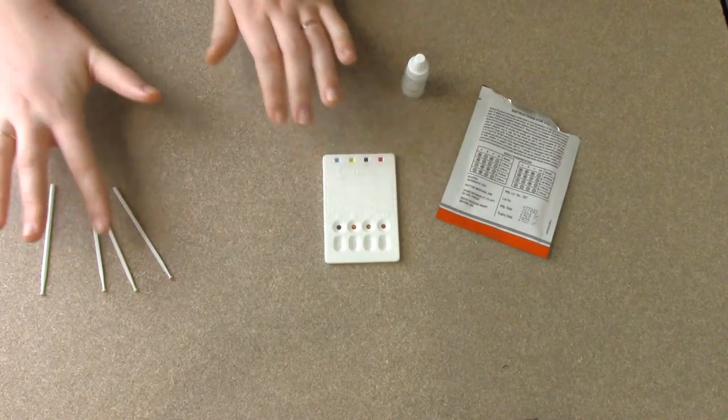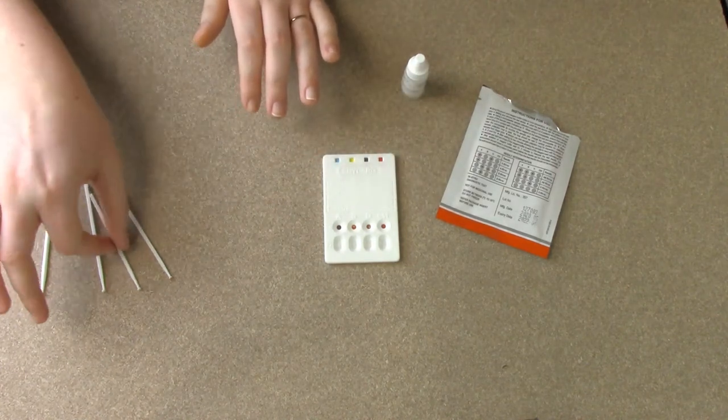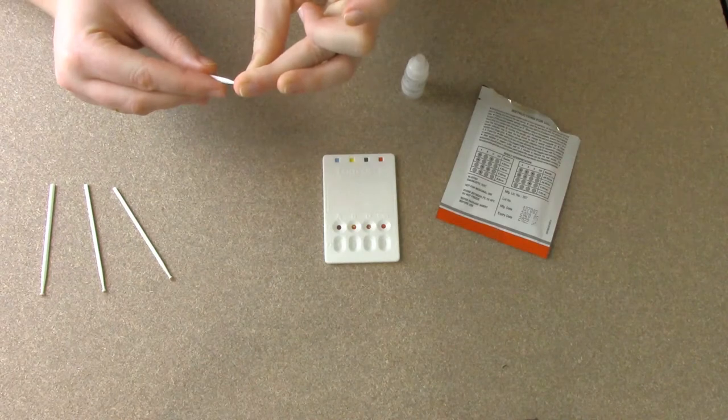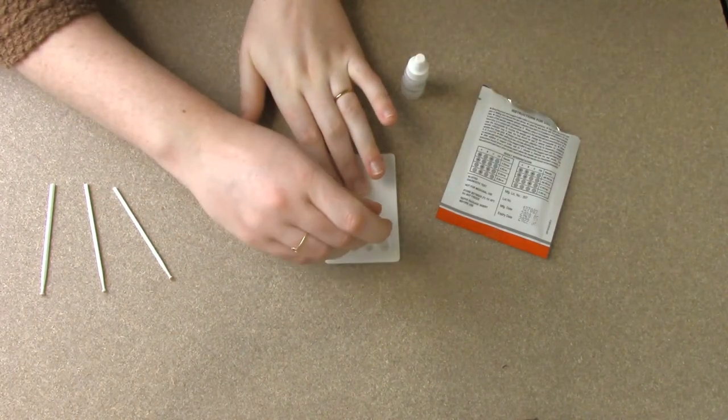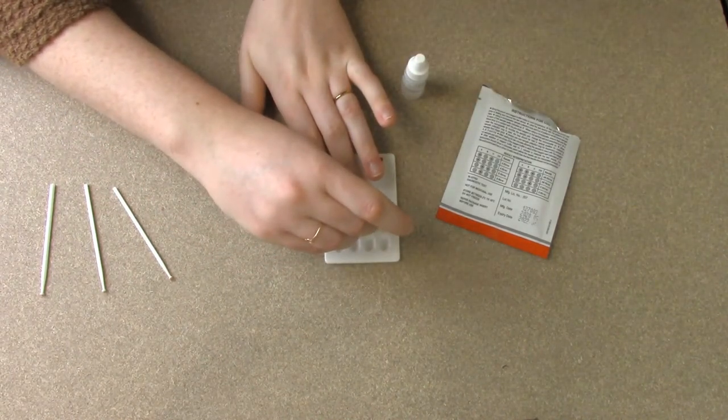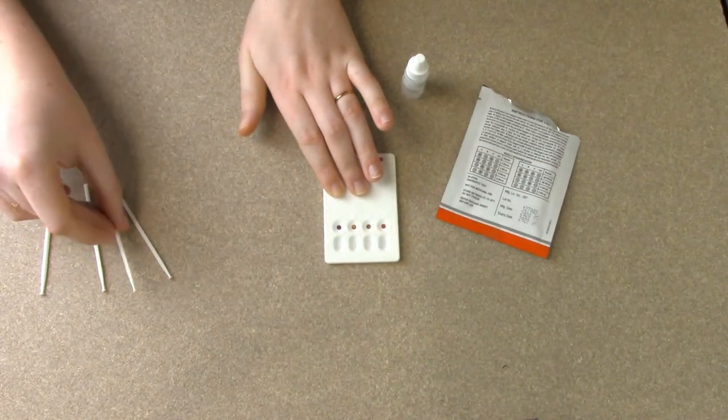Great. So I kept it in order A, B, D, and control. If you need to add any more blood, and look, it looks like D almost could use a little additional blood. So I'm just going to add a little bit in there using the same collection stick that I used before.